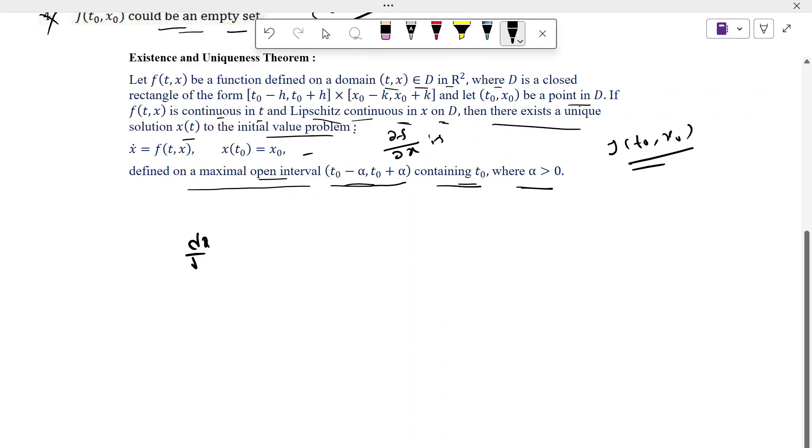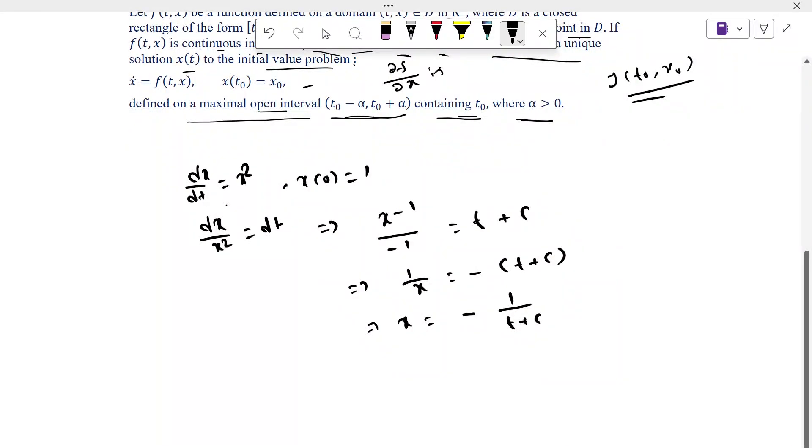dx/dt equal to x² and x(0) equal to 1. Now we solve this equation: dx/x² equal to dt. By integrating, we get -1/x equal to t plus c, so finally we get x equal to -1/(t plus c).